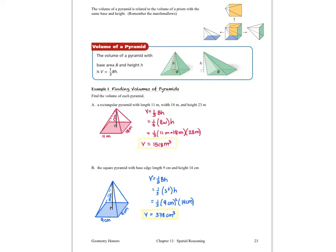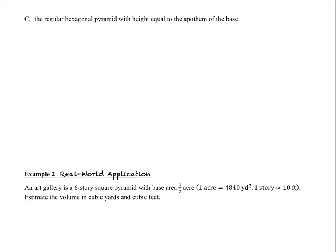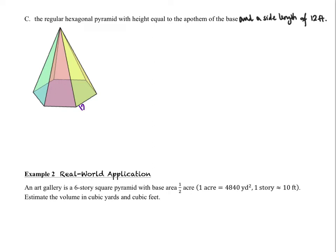We had a rectangular pyramid and a square pyramid. On the next page we've got a hexagonal pyramid to work with. Question C says we have a regular hexagonal pyramid with a height equal to the apothem of the base and a side length of 12 feet. We're not required to have a drawing, but it sometimes helps. All sides of the hexagonal base are 12 feet.